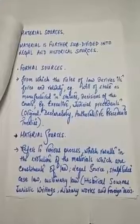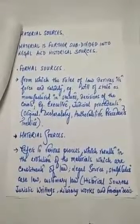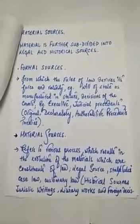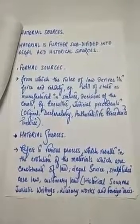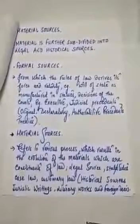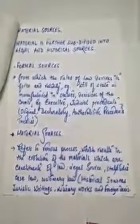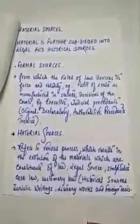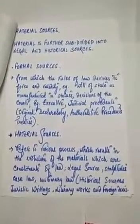Formal sources are those from which rules of law derive their force and validity. Examples include the will of the state as expressed in statutes, decisions of courts, executive and judicial precedents, original declaratory or authoritative precedents, and treaties. Material sources refer to various processes that result in the evolution of material which constitutes the law. Legal sources include statutes, case law, and customary laws. Historical sources include juristic writings, literary works, and foreign decisions.